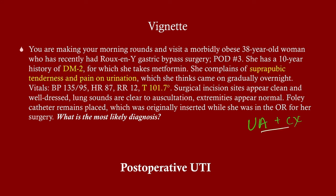Our next step is to get a urinalysis and culture. The suprapubic tenderness and pain on urination are classic UTI. What risk factors does she have? First, she has a Foley catheter in — and as we'll see, your risk goes up every day that catheter is in place. She also has type 2 diabetes, she's a woman, and she's probably had UTIs in the past. Some women are just predisposed to them. But the indwelling Foley catheter is probably the biggest risk factor here.